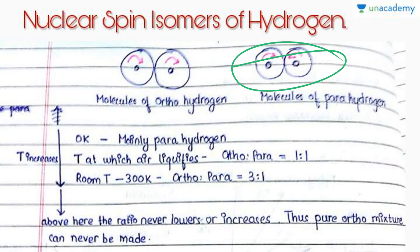Let us see how their ratio changes when we vary temperature. At zero Kelvin, very low temperature, mainly para hydrogen is formed. When we slightly increase the temperature, for example at the temperature at which air liquefies, ortho and para are found in the ratio 1:1. At room temperature, 300 Kelvin, ortho and para are in 3:1 ratio—that is, we get 75% ortho. We can never get pure ortho, but yes, we can get pure para at a low temperature, for example 20 Kelvin.